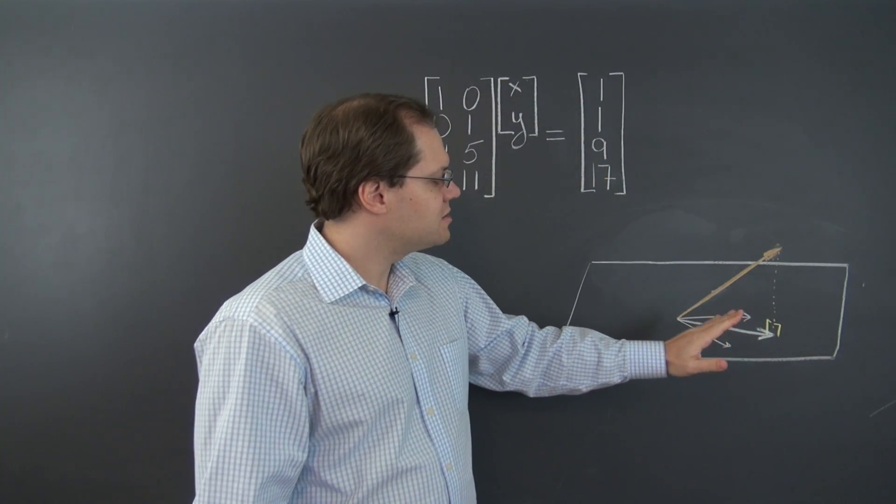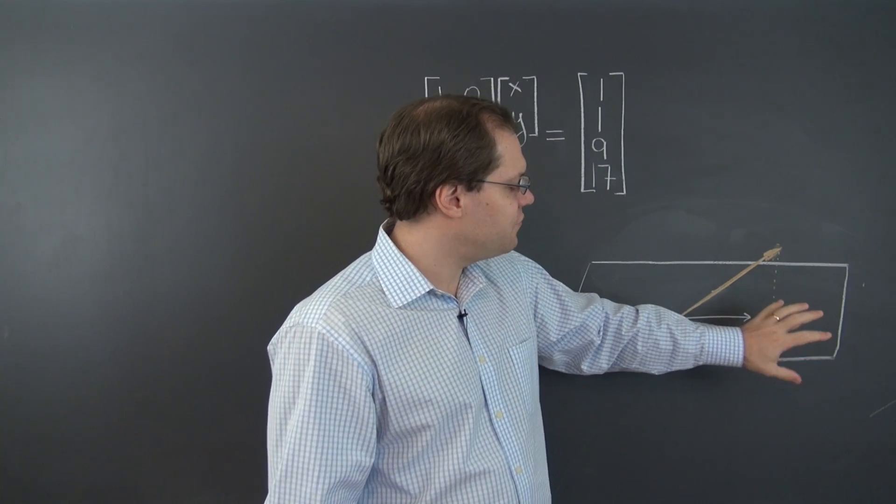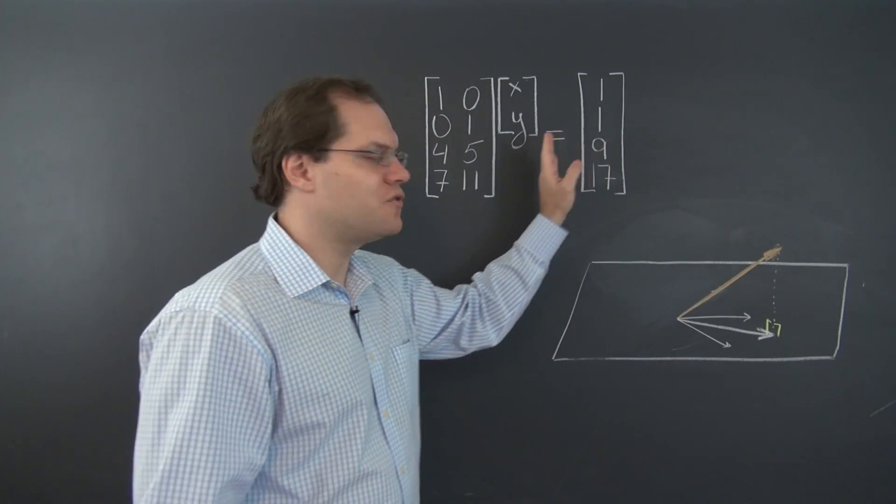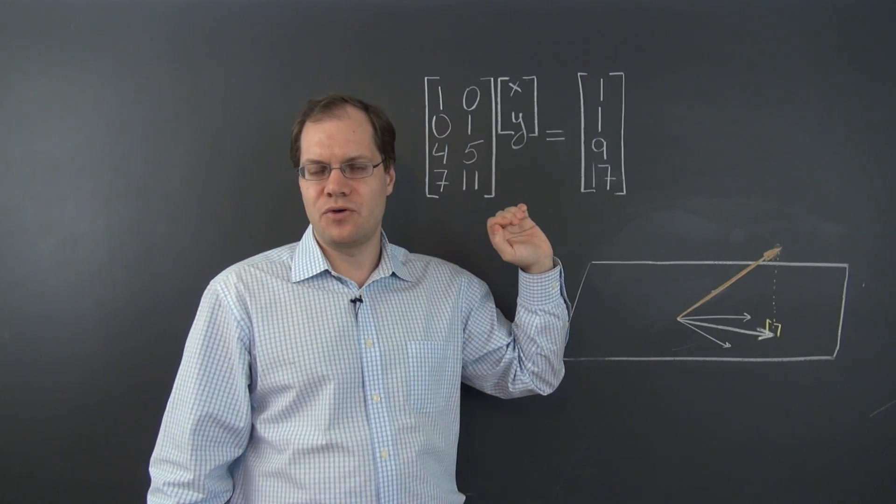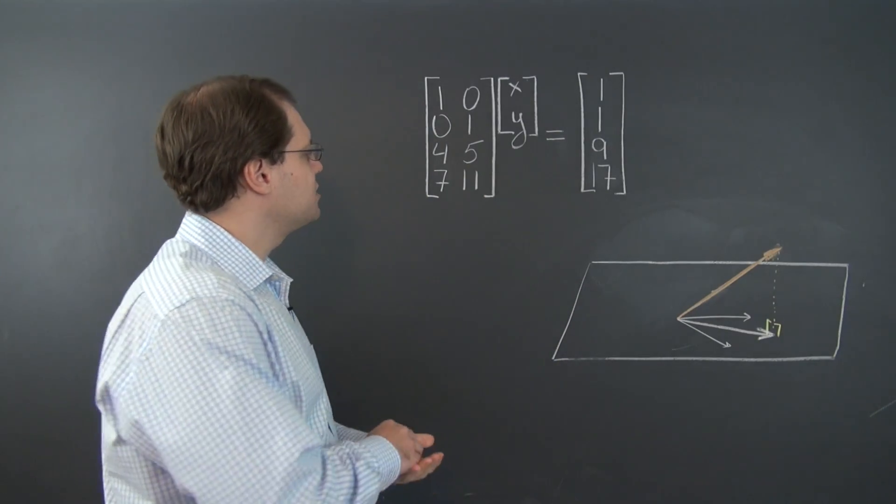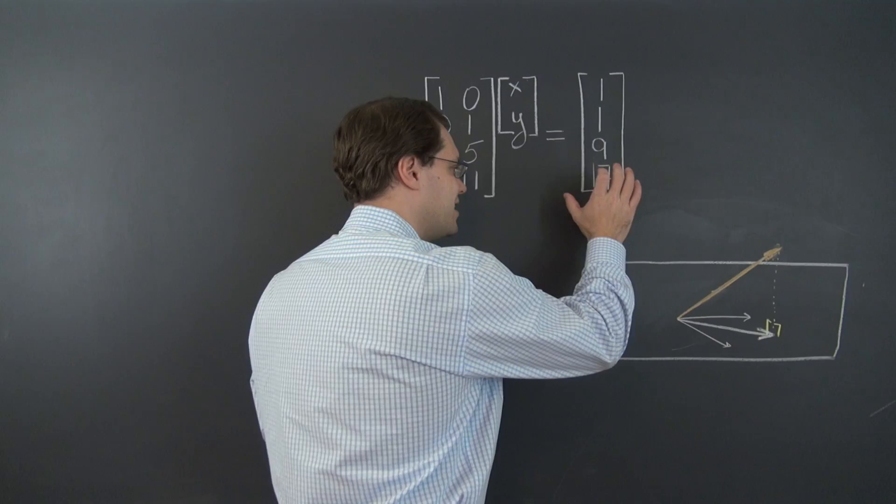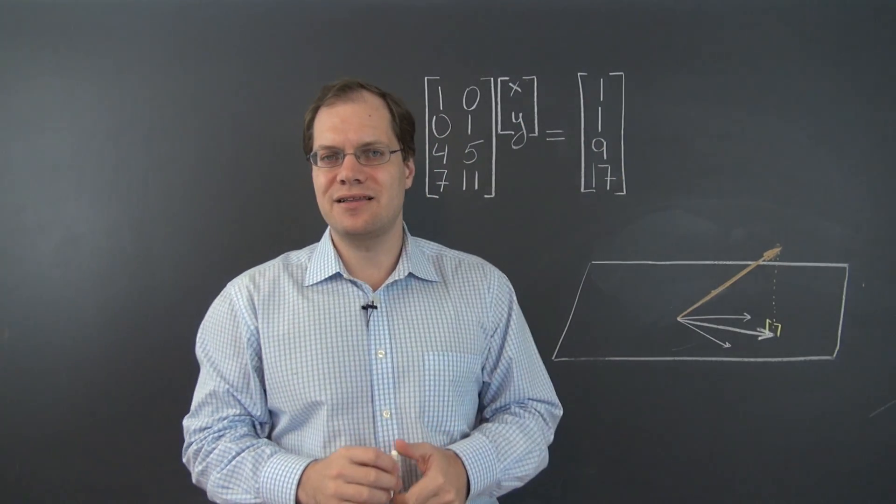So could we somehow take this view and carry it over to our vectors in R^n? Well, what would we say? We would say that, no, we cannot obtain the vector on the right-hand side exactly, but maybe we can get as close as possible to it.